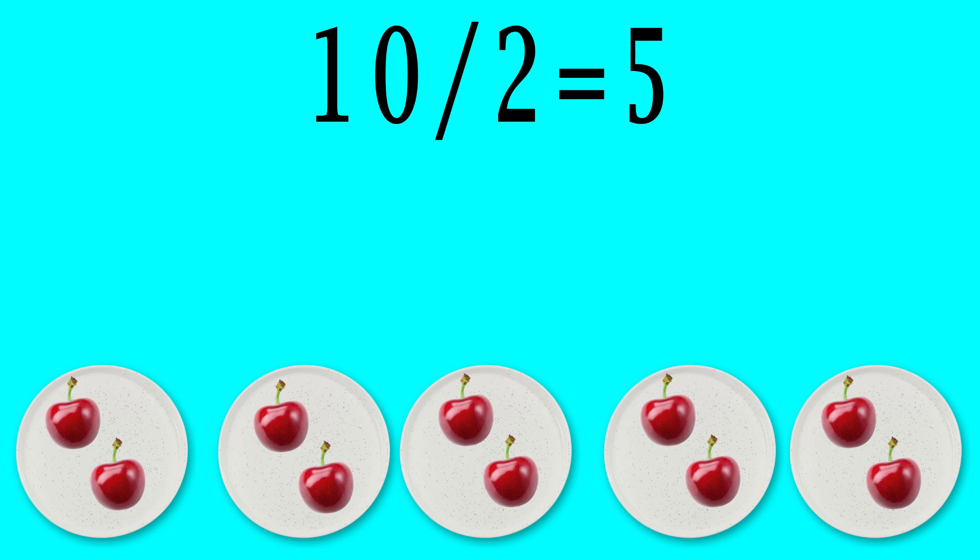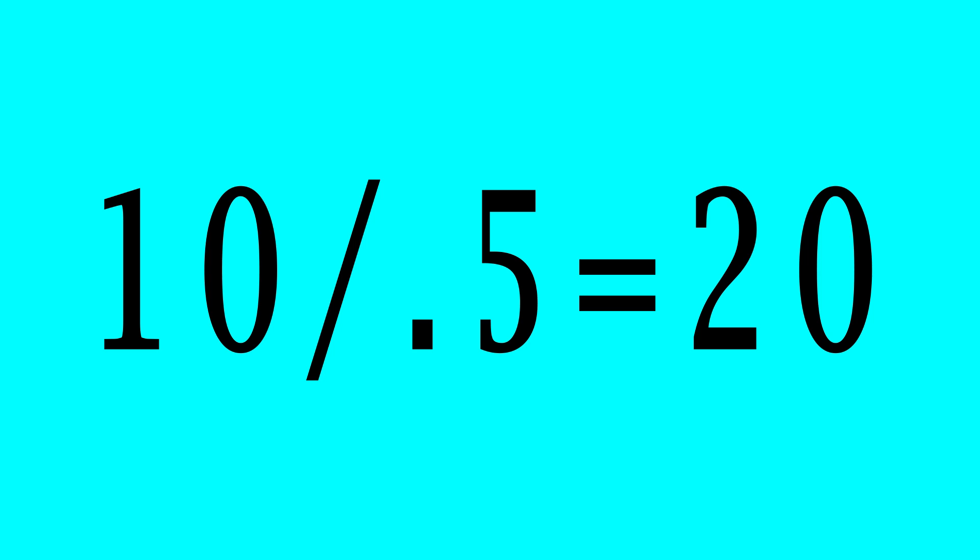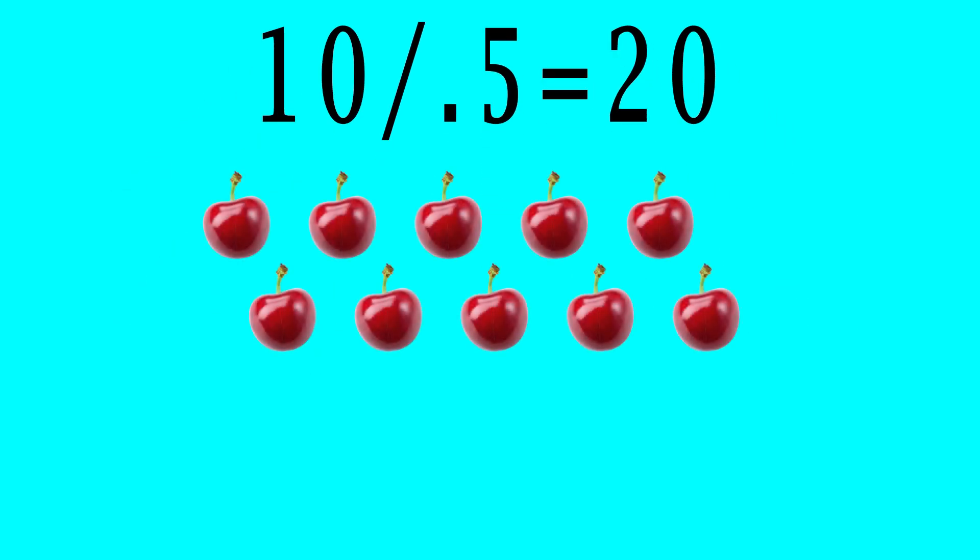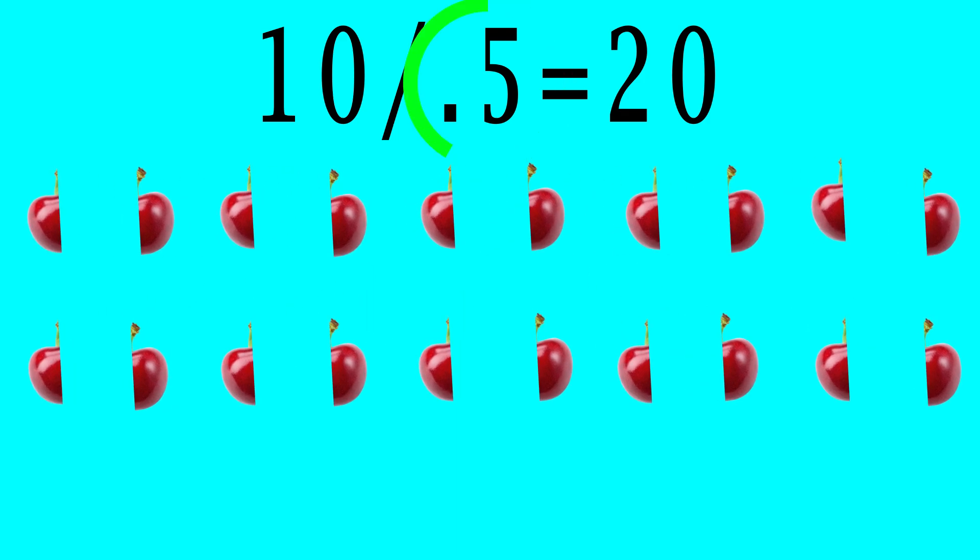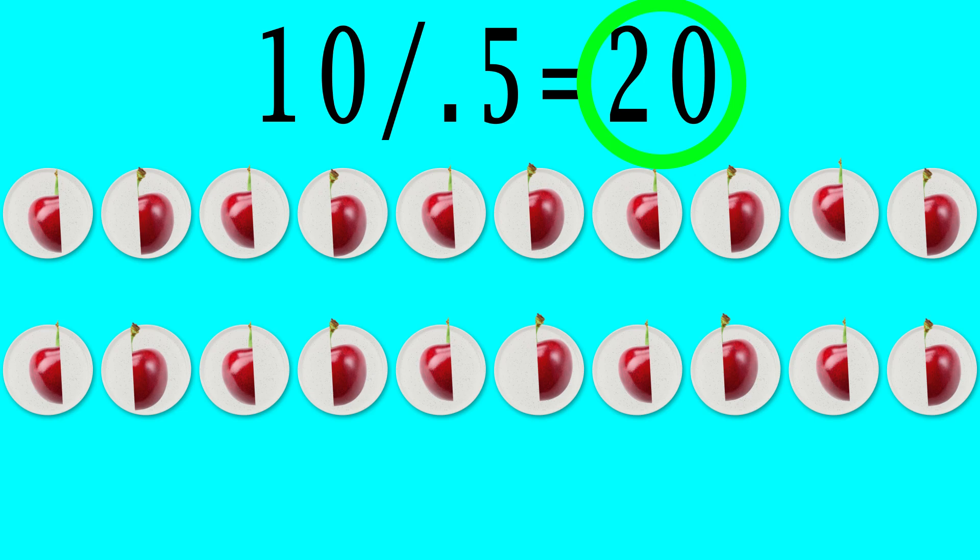But what does dividing by fractions or decimals mean? 10 divided by 0.5 equals 20. Well this is saying that if we cut each of the cherries in half, and we put one of those on each plate, we will have a total of 20 plates. Simple.